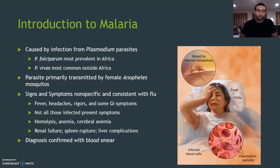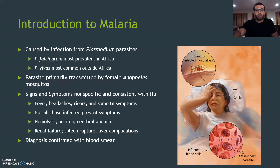It's important to note that not everybody infected presents symptoms, and some complications include hemolysis, anemia, and cerebral anemia. Some chronic conditions include renal failure, spleen rupture, and some liver complications. And eventually, if it's left untreated, it can lead to death. Diagnosis is confirmed with a blood smear.